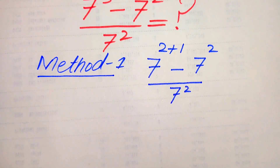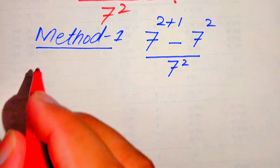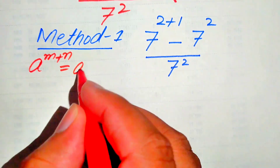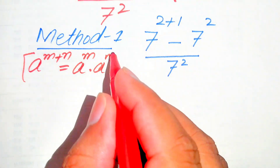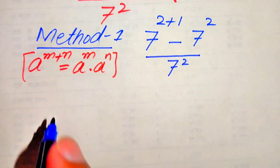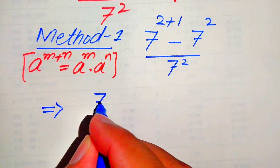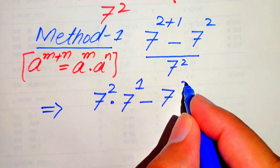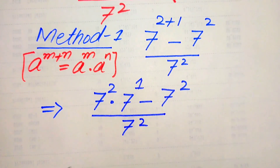Here we use the exponential law: a to the power of m plus n equals a to the power of m multiplied by a to the power of n. Applying this law, we break the exponent and rewrite it as 7 squared multiplied by 7 to the power of 1, minus 7 squared, all divided by 7 squared.